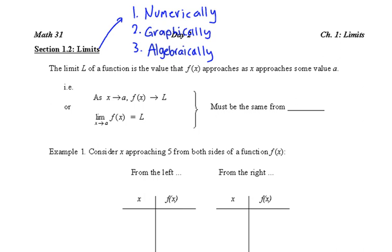So the limit L of a function is the value that f of x approaches as x approaches some value a. So as x approaches a, our function is going to approach the limit. So we have to approach it from, must be the same from both sides.